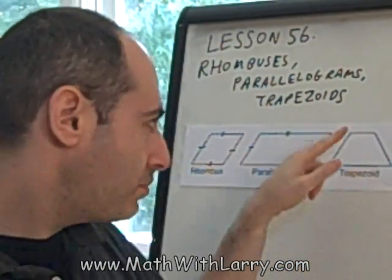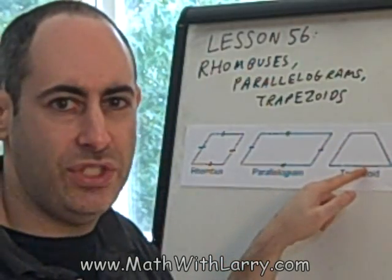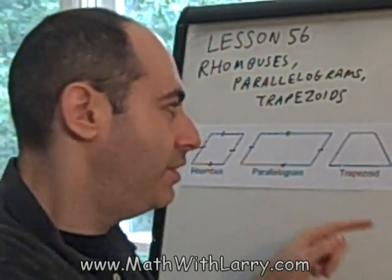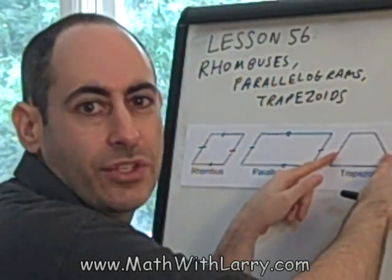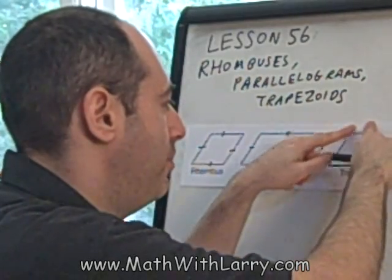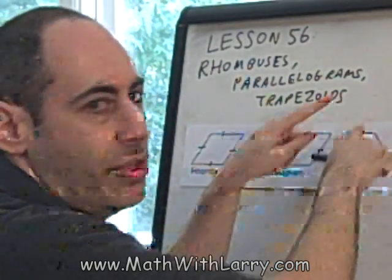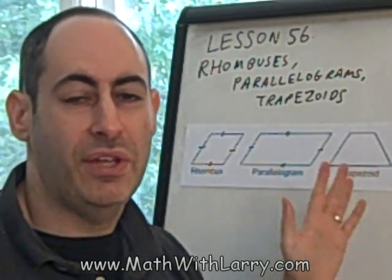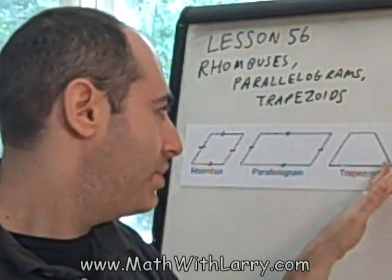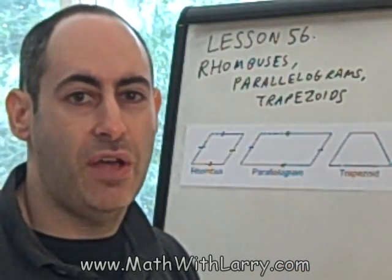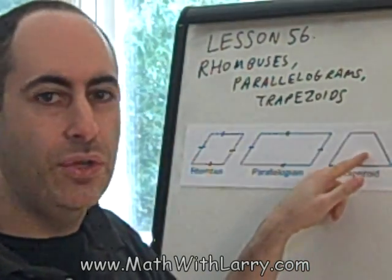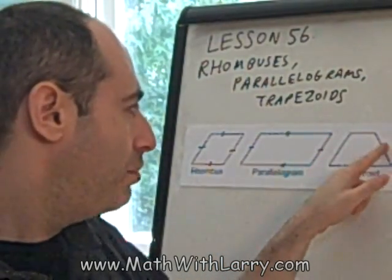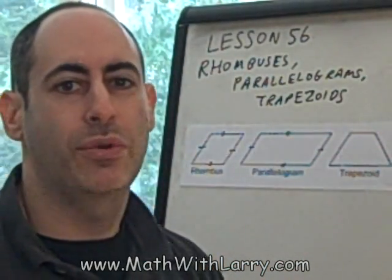So getting back to a trapezoid: the trapezoid has one pair of sides that are parallel, and another pair of sides that are not parallel. Here you can see that the left and the right sides are definitely not parallel — if we were to extend them, they would certainly meet and cross each other up here. In the case of a trapezoid, we don't really know anything about the lengths of the sides; some of the sides could be equal or they may not be equal. All that's significant is that we have one pair of parallel sides and one pair of non-parallel sides, and we call that a trapezoid.